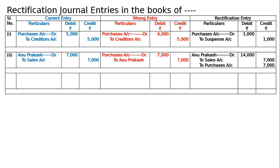Third part: credit sale to Rahul 7000 was recorded as 700. The correct entry is Rahul debited to sales 7000. But the mistake was Rahul debited to sales only 700. Recording was done in both accounts incorrectly. This is under recording — 6300 was recorded less.